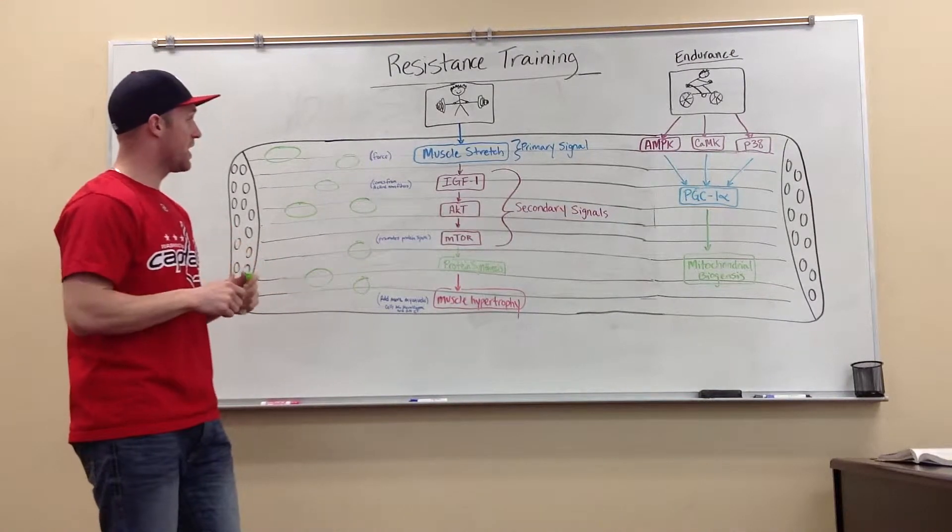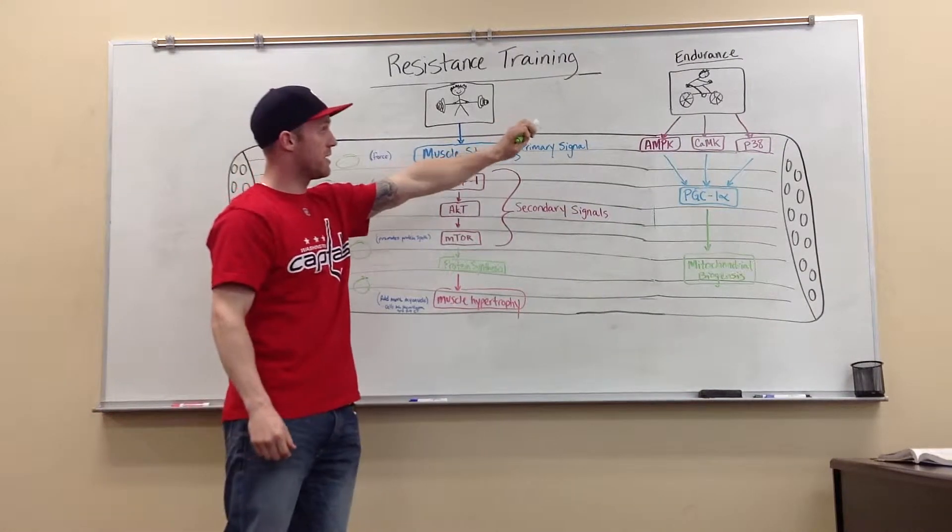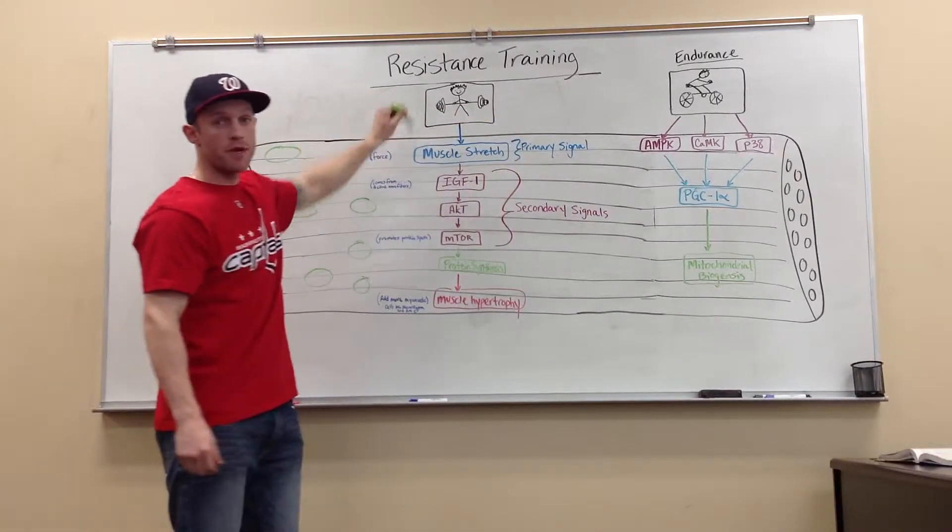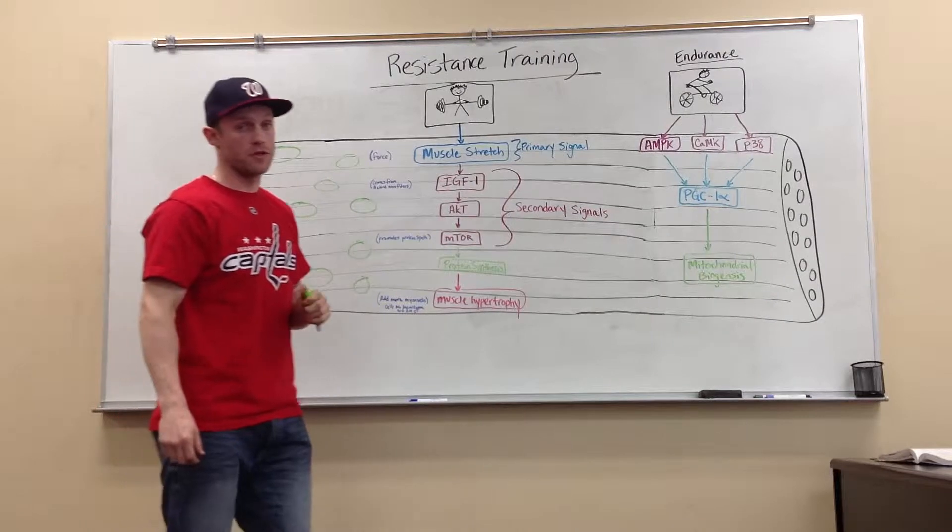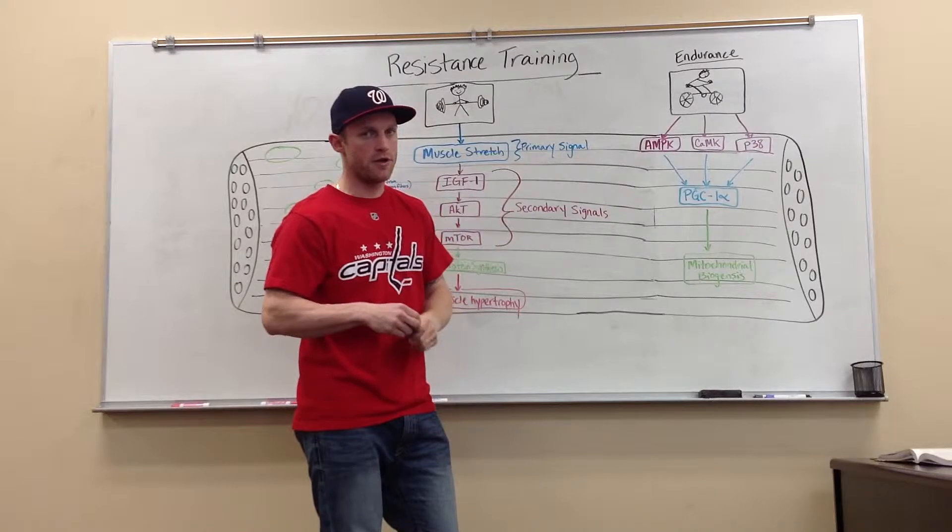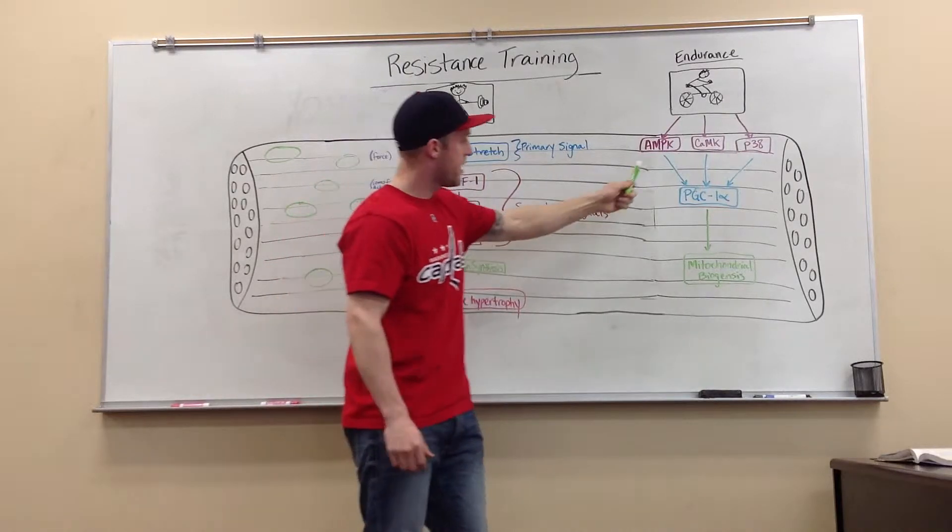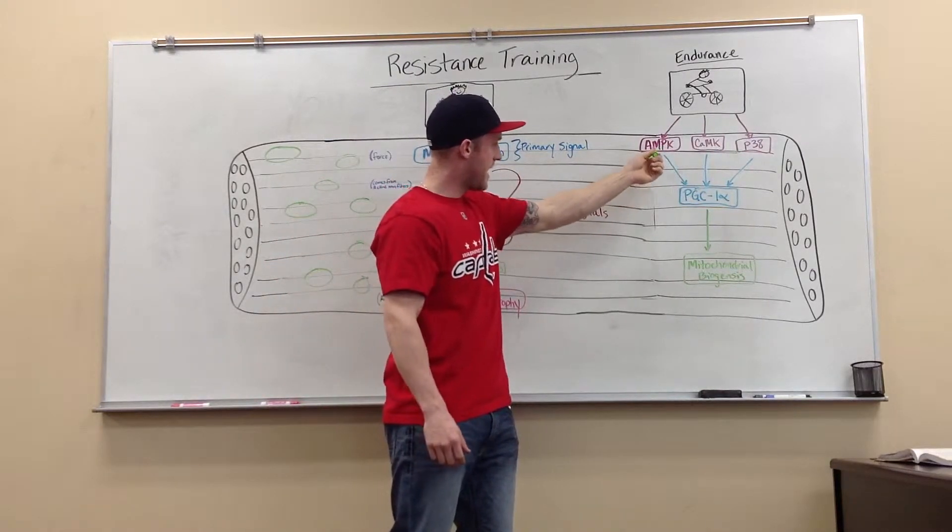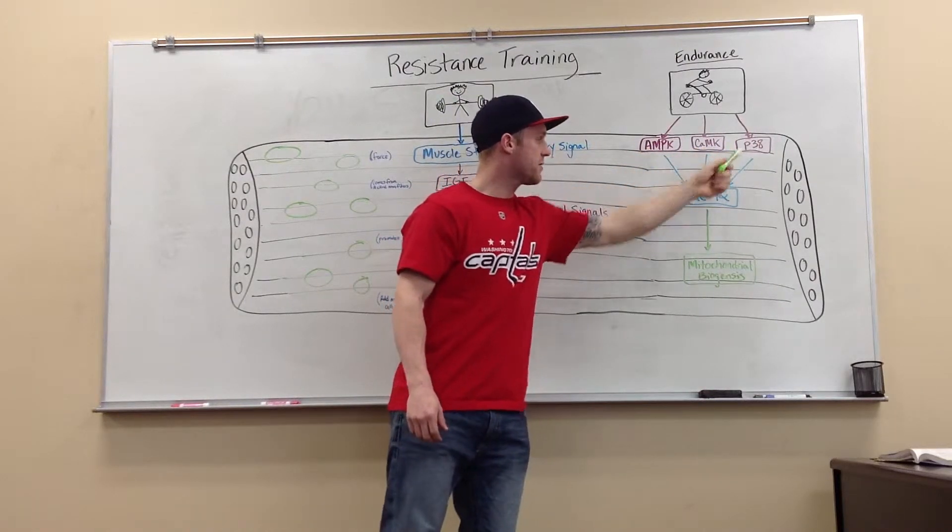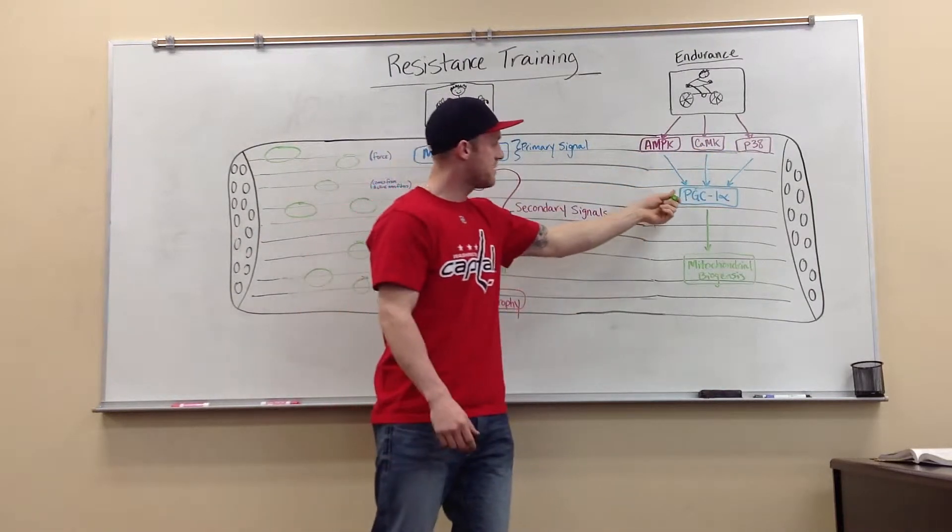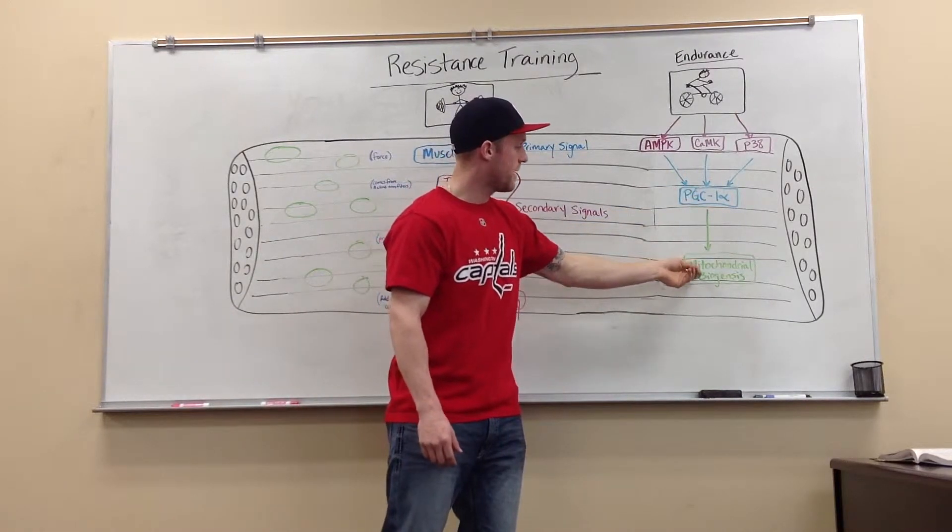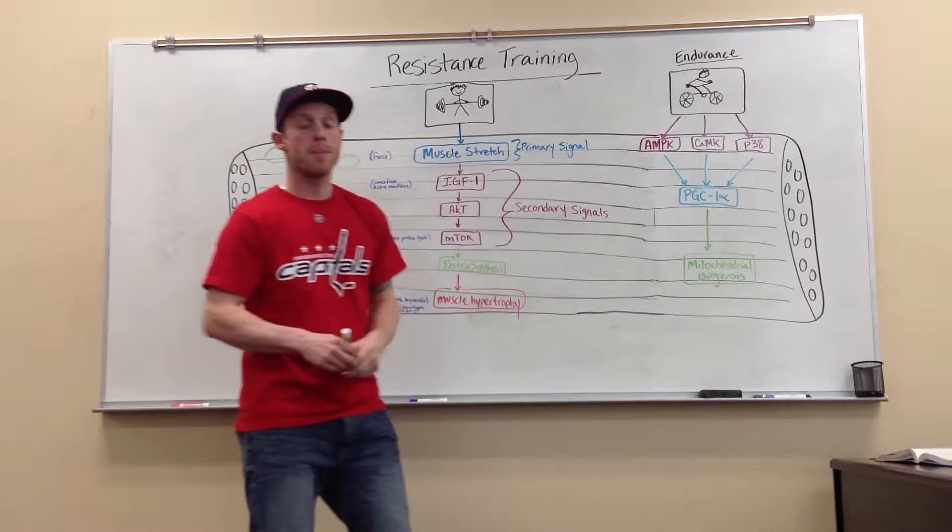Now I'm going to switch gears, and I'm going to talk about endurance, and why this could be a problem and jeopardize your resistance training performance. So I skipped the primary signals for endurance because I just did a video about that, and I just put AMP, AMPK, CAMK, and P38, and just showing that it had the master enzyme PGC, which would lead to mitochondrial biogenesis.